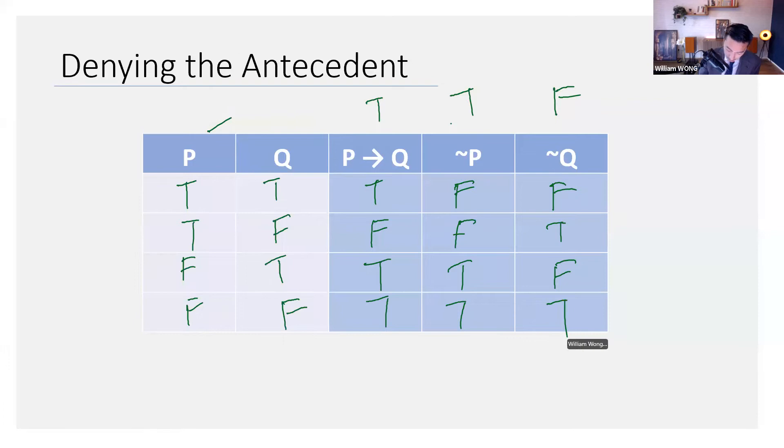Question now is, where are the rows that have true premises? Well, this one, the third row has true premises, and this one has true premises. Then we look at the conclusion and we ask, is there a row with a false conclusion? Well, within these rows, is there a row with a false conclusion? Indeed, there is, right here. So by way of a truth table, we've now shown denying the antecedent is indeed an invalid inferential move. Any questions?